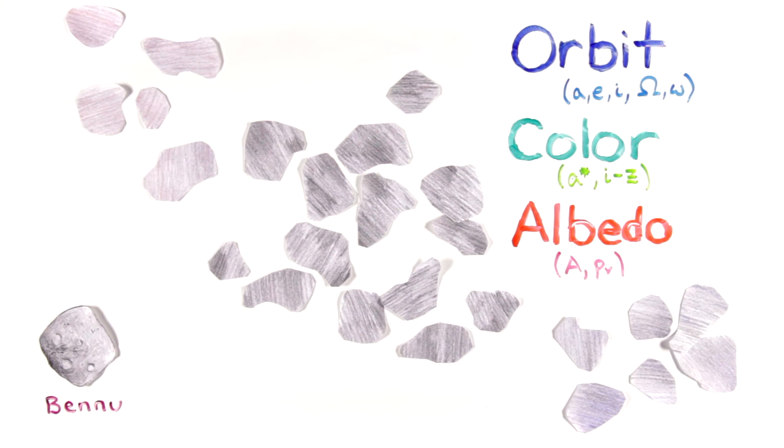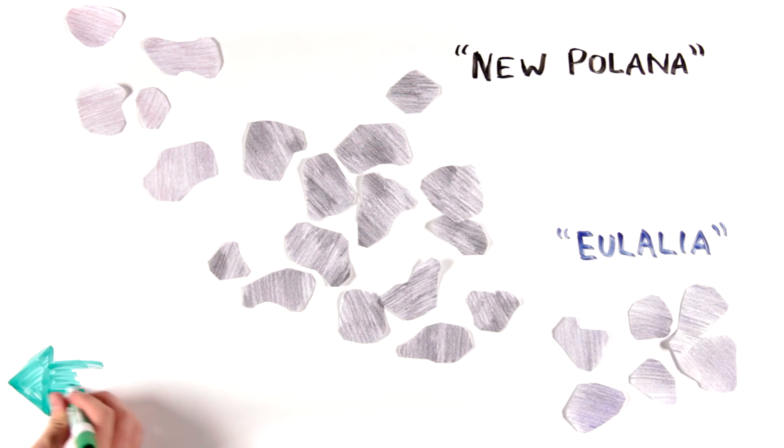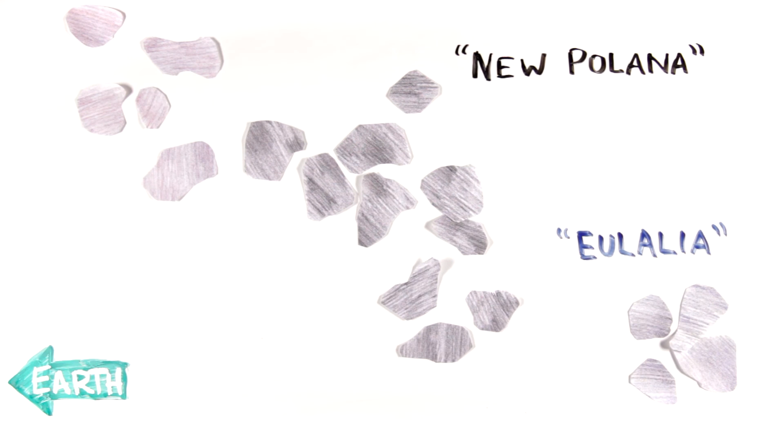Of those families, the two whose orbits are most likely to send asteroids like Bennu toward the Earth are known for now as the New Polanna and Eulalia families. Of those two, the New Polanna family is more efficient at sending us Bennu-like objects. So scientists think Bennu came from the New Polanna family.